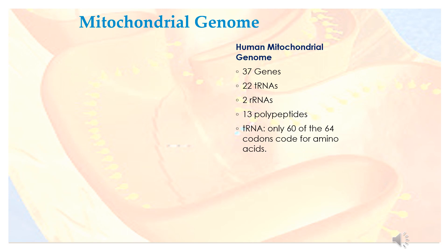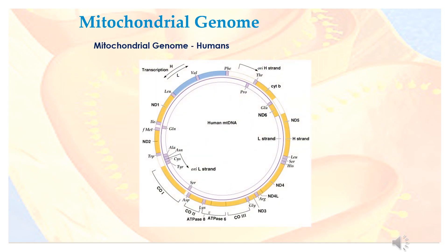The human mitochondrial genome contains 37 genes, encoding 2 ribosomal RNAs and 13 polypeptides. Only 60 of the 64 codons code for amino acids in the human mitochondrial genome.